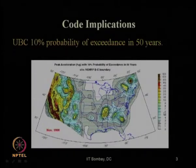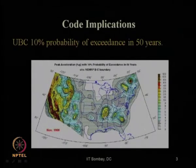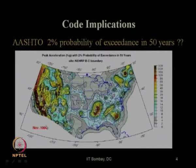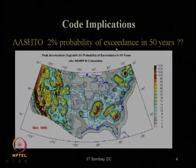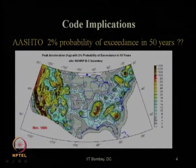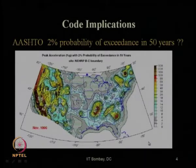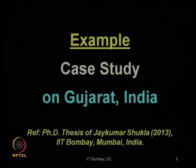These are the values in percent g for a NEHRP-based site category of B and C for the US. Similarly, for AASHTO code, the proposed map for the US uses 2 percent probability of exceedance in 50 years. That is how seismic design codes implement seismic hazard analysis results for further application in design.